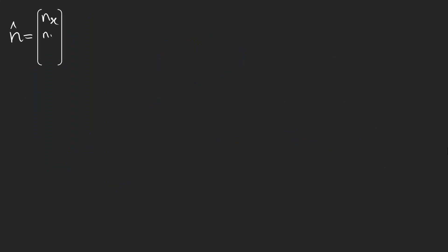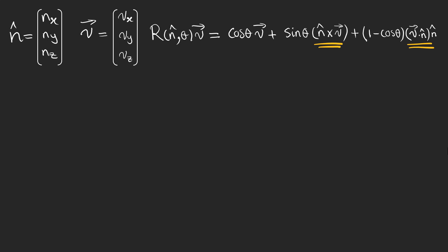But how can we find the matrix representation of the rotation? Let's represent the unit vector n by a column matrix and also vector v using another column matrix like this. If we can find a matrix representation of these two terms, we can find the matrix representation of the rotation matrix R.